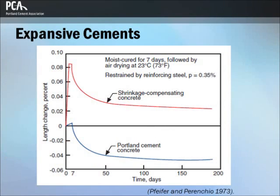Expansive cement is a hydraulic cement that expands slightly during the early hardening period after initial set. It must meet the requirements of ASTM C-845, where it is designated as Type E1. Currently, three varieties of expansive cement are recognized: K, M, and S. The graph shows the length change history of shrinkage compensating concrete containing Type E1(S) cement and Type 1 Portland cement concrete.